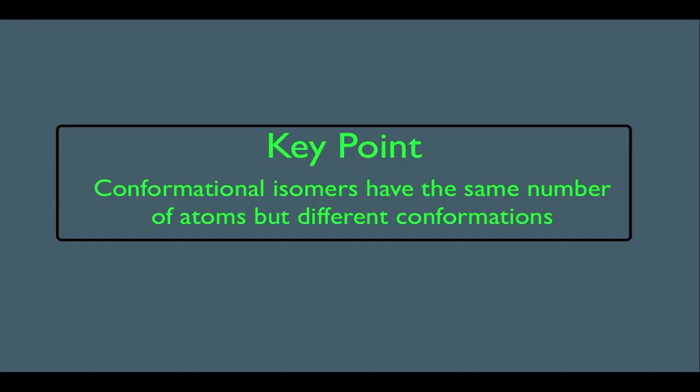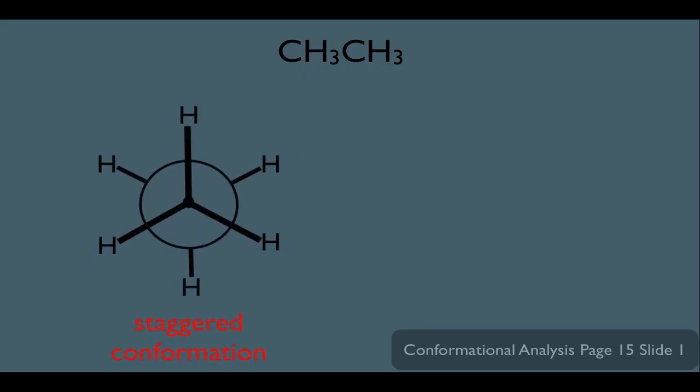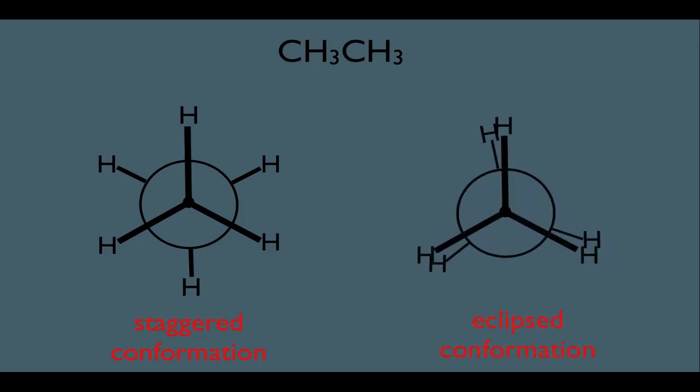Let me show you some examples. This molecule, two carbons long, is called ethane. We saw before that we could represent ethane as a Newman projection. One option is the staggered conformation. We also saw that we could represent this molecule as an eclipsed conformation.